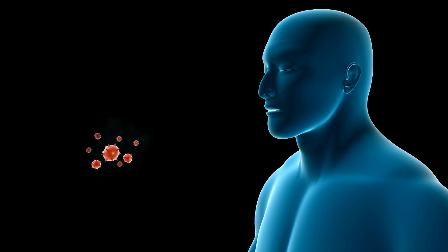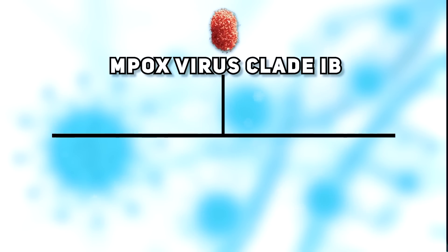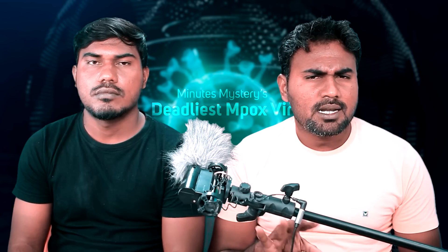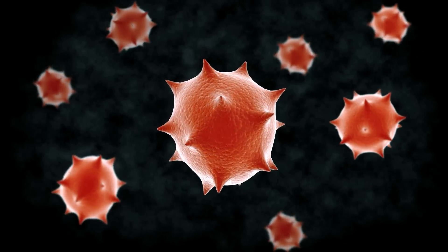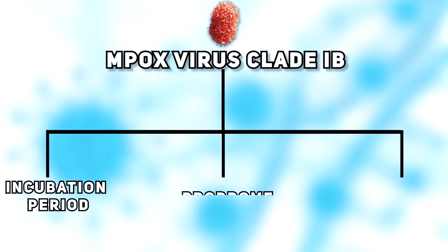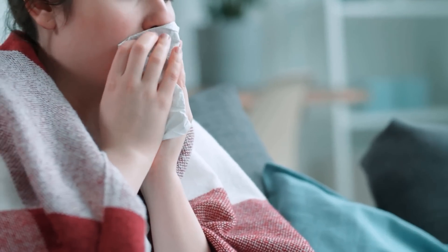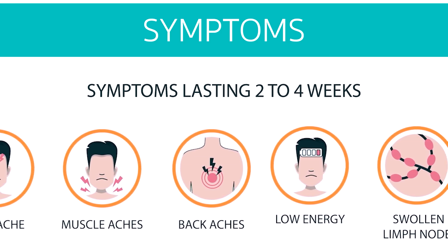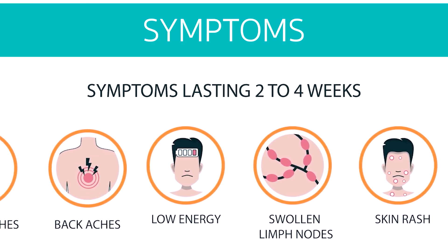We are going to talk about M-Pox Clade 1B in three stages. The first stage is the Incubation Period, where the virus enters your body, adapts, and multiplies silently. The second stage is the Prodrome stage.